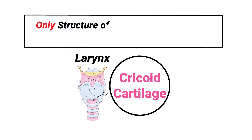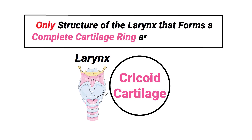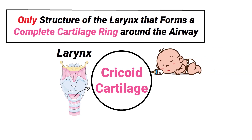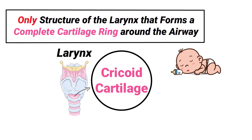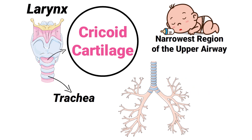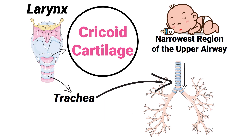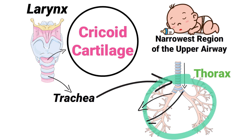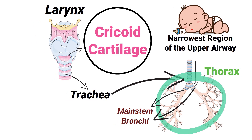It is the only structure of the larynx that forms a complete cartilage ring around the airway. In infants, the cricoid cartilage is the narrowest region of the upper airway. The trachea is connected to the cricoid cartilage and extends down throughout the neck and into the thorax, where it divides into the two main bronchi.